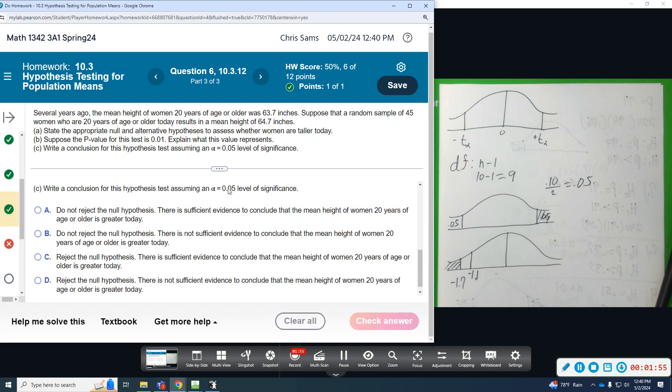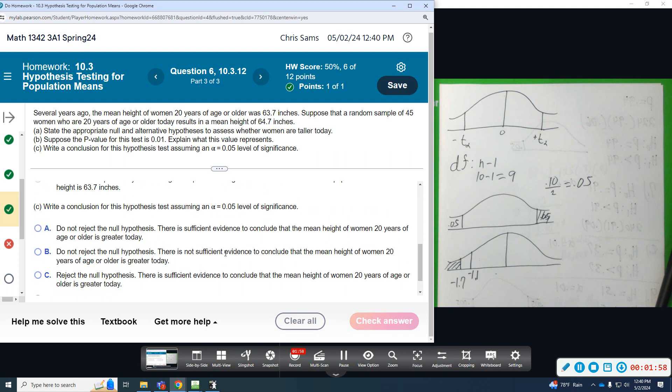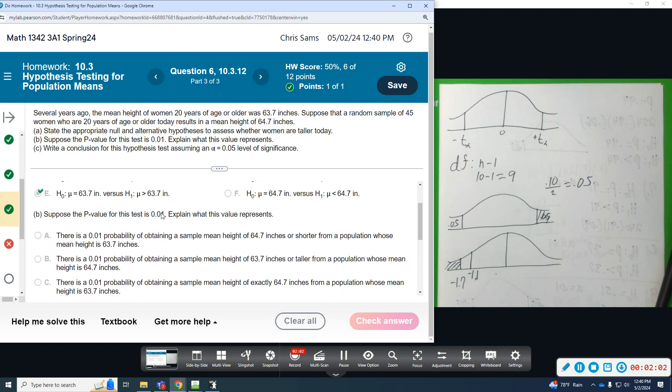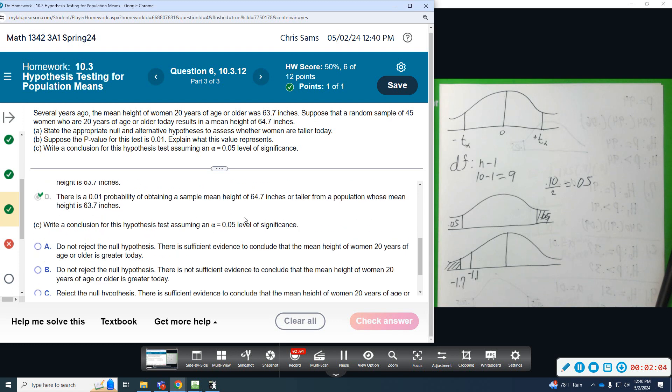We're going to write a conclusion if alpha is equal to 0.05. So if our p-value, which is 0.01, is less than alpha, we will reject the null. If I was in the rejection region, so there's evidence that shows that it is possible that the actual mean height of women 20 years of age or older is greater today.